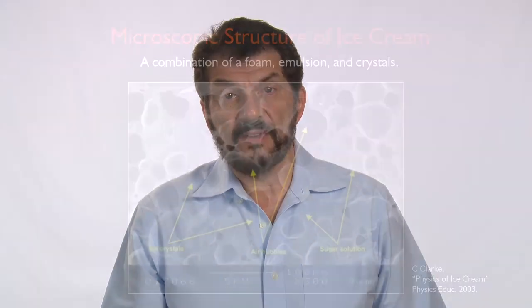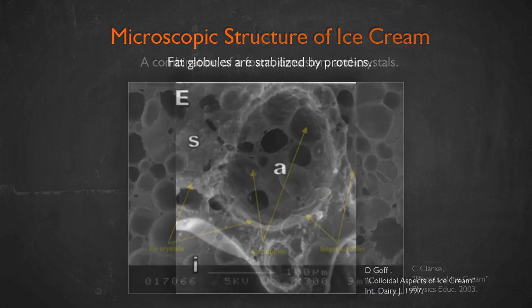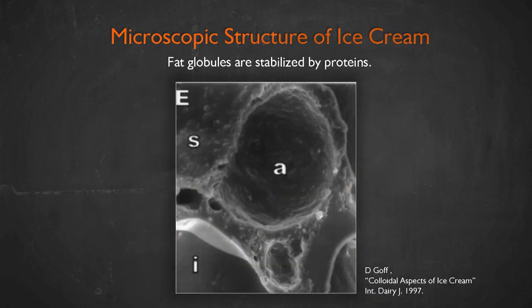Here's an image of ice cream taken with an electron microscope. You can see that it's a foam — you can see these bubbles of air. And if we look more carefully, you see there are globules of fat. These are the colloidal particles that are stabilizing the interface of the bubbles, sitting at the interface to stabilize the foam.